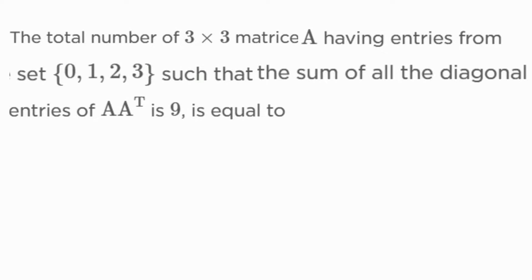The question says: the total number of 3×3 matrices A having entries from the set {0, 1, 2, 3} such that the sum of all diagonal entries of A·Aᵀ is equal to 9.